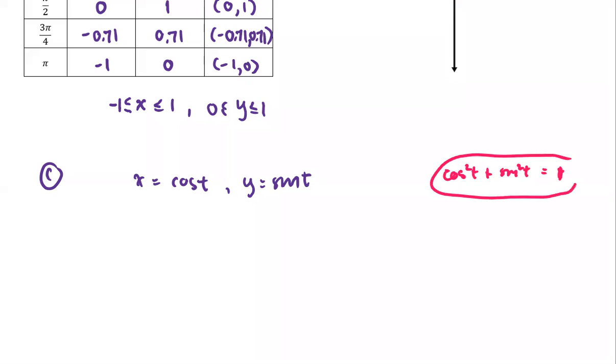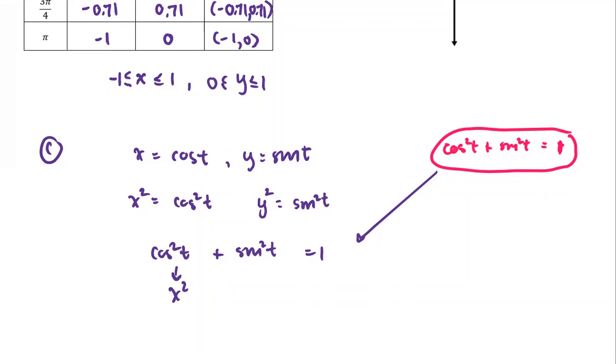If we form x squared, that gives us cosine squared t. Similarly, y squared is sine squared t. Since cosine squared t plus sine squared t equals 1, and cosine squared t is x squared and sine squared t is y squared, then we can see the relationship of x and y in the form x squared plus y squared equals 1, which is the equation of the circle as x squared plus y squared equals 1 squared.